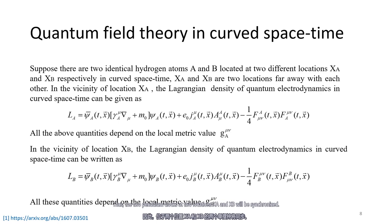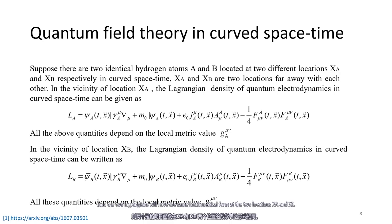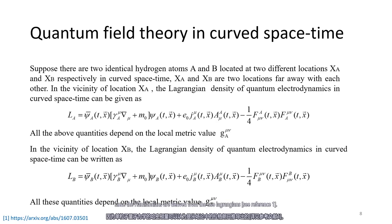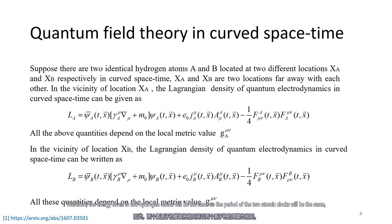Therefore, the two pendulum clocks at the two locations will be synchronized. Since all differences between the mathematical forms of the two Lagrangians LA and LB are caused by the difference between the two metrics GA and GB, if the values of the two metrics at the two locations are equal, then the two Lagrangians will have the same mathematical form. As a result, the two Hamiltonians of the two hydrogen atoms will have the same mathematical form, so the energy levels of the two hydrogen atoms will be the same, and the periods of the two atomic clocks will be the same. The two atomic clocks at locations XA and XB will be synchronized.